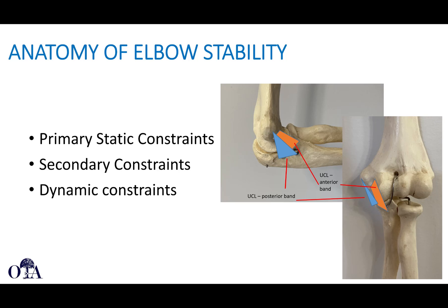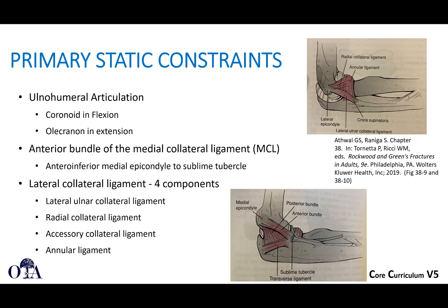The important anatomy to understand involves primary static constraints or stabilizers, secondary constraints or stabilizers, and dynamic constraints. Here you can see a depiction of the ulnar collateral ligament, which we will go through.